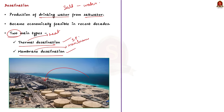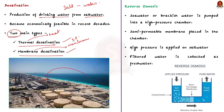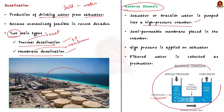The most commonly used technology for desalination plants is reverse osmosis. In simple terms, reverse osmosis is a technology used to remove the majority of contaminants from water. This is done by pushing water under pressure through a semi-permeable membrane. Now, how does reverse osmosis work? Look at the diagram here — it shows how this process works. Seawater or brackish water is pumped into a high-pressure chamber.